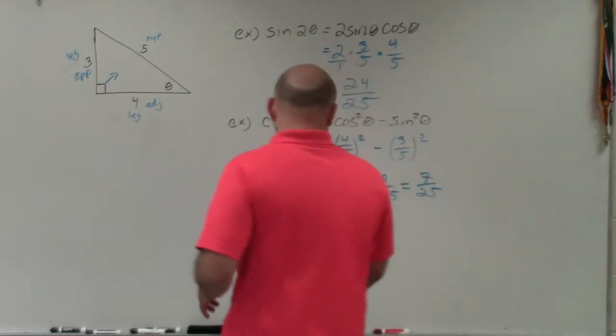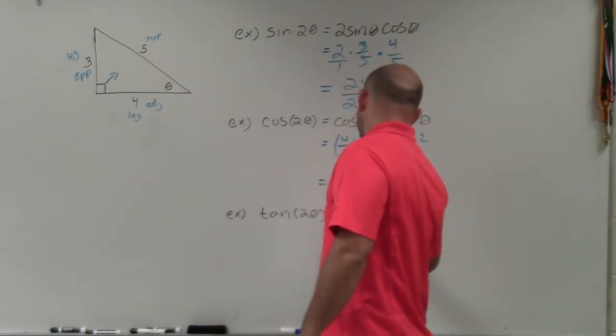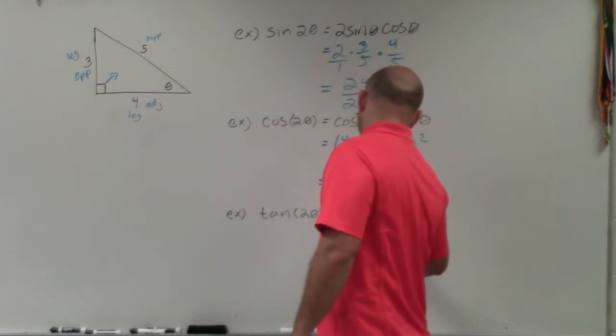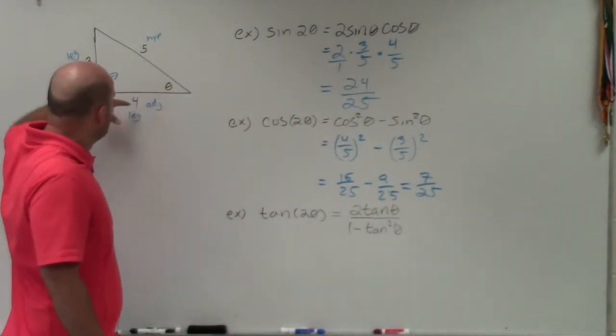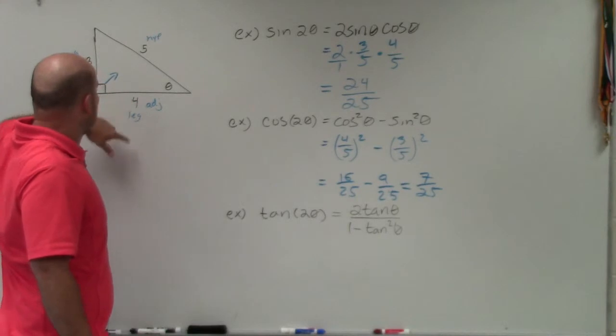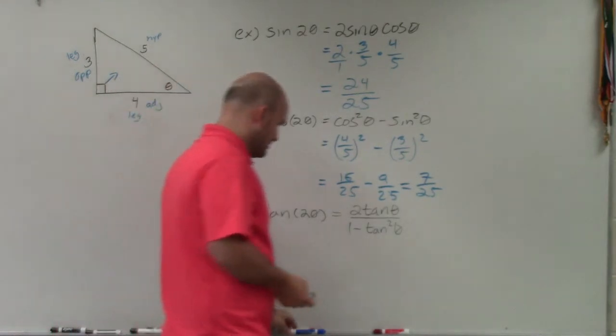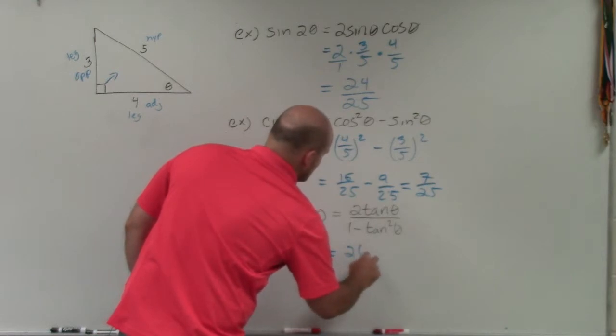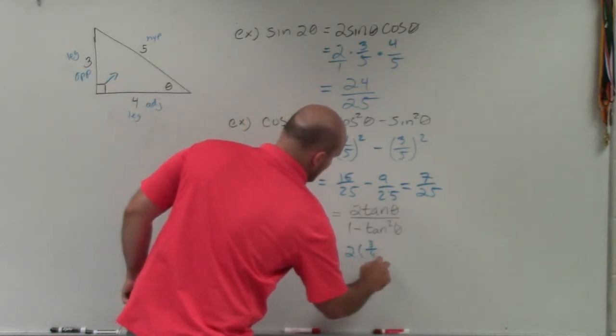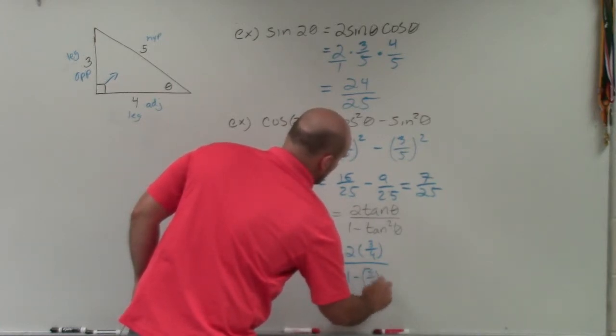So again, we'll take a little extra precaution with this one. I'll try to make sure I show all my steps. So I have 2 tangent of theta divided by 1 minus tangent squared of theta. Remember cosine was adjacent over hypotenuse. Sine is opposite over hypotenuse. Tangent is opposite over adjacent. So I'm going to go and plug in those values here. So in doing that, I now have 2 times 3 over 4 divided by 1 minus 3 over 4 squared.